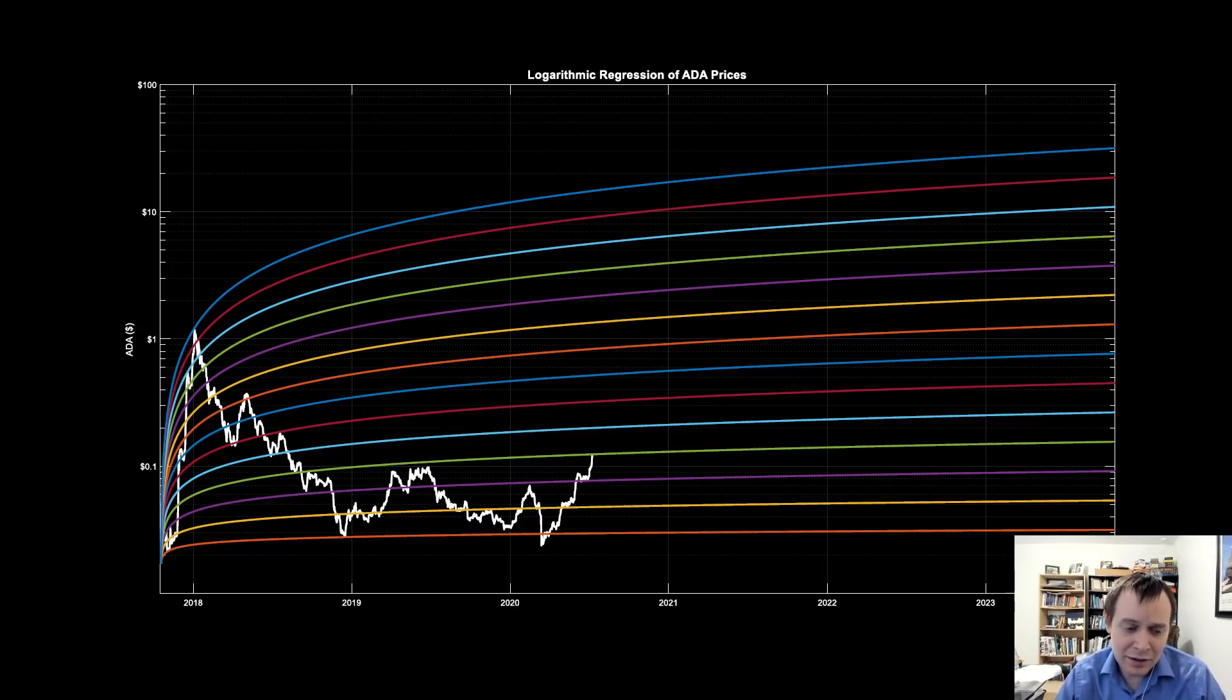This is what the chart looked like back then when I first discussed it, or the last time I discussed it anyways. And this is what it looks like if you update it. So you can see we essentially came up a little, we came back down to the purple line, and then we've moved up two and a half regression lines here.